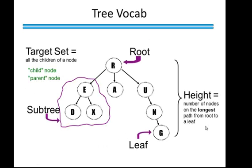Some basic tree vocabulary, much of which should be familiar to you. A leaf is a node that doesn't have any children. A subtree is a particular portion of the tree rooted at a particular node. A root is the topmost node. We refer to child nodes and parent nodes. And the height is the number of nodes on the longest path from root to a leaf.